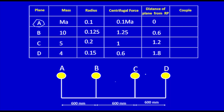Next, I am going to find the couple, which is a multiplication of force and distance. The results are: 0.1·M_A × 0 = 0; 1.25 × 0.6 = 0.75; 1 × 1.2 = 1.2; and 0.6 × 1.8 = 1.08. From the table, all the values of the couple polygon are known, whereas one value is unknown in the force polygon.